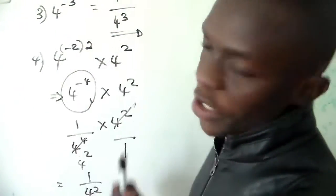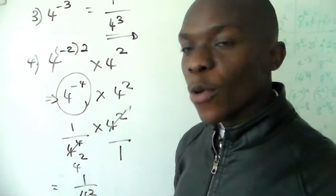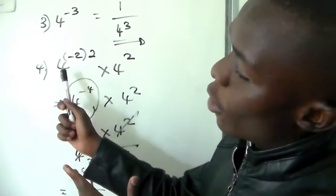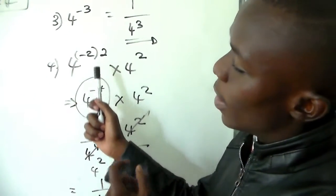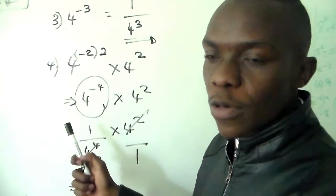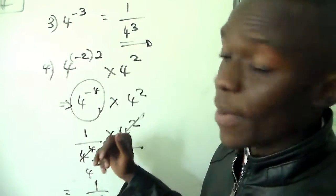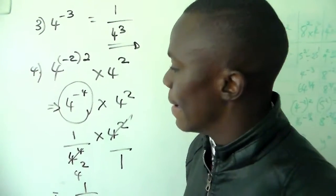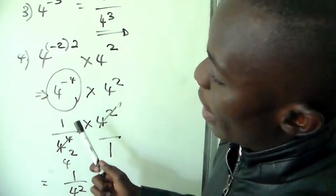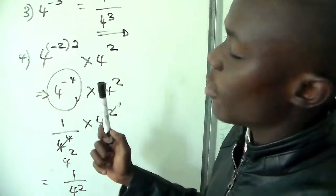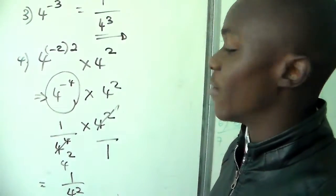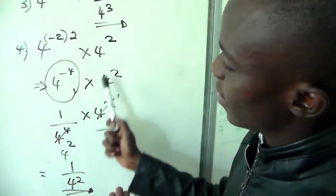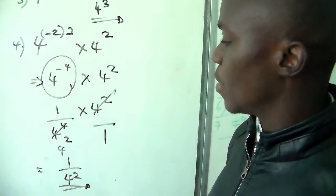For question number four, Tanaka from Gweru, this is how we work it out. Here we have four to the power of negative two, then raised to the power of two. Multiplying gives four to the power of minus four. We then change this into an inverse, which gives one over four to the power of four, then multiply by four to the power of two.